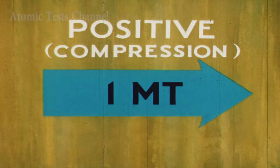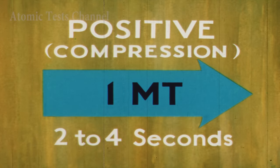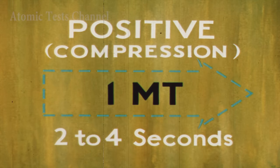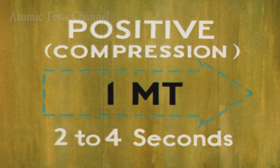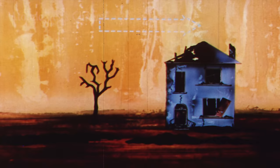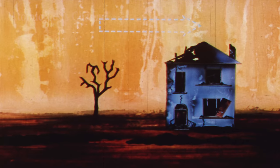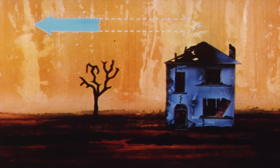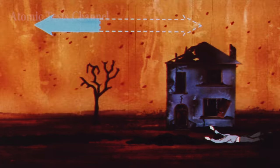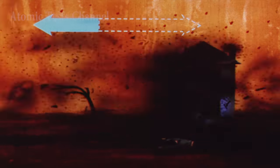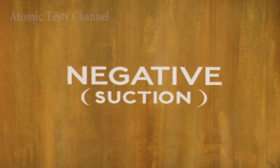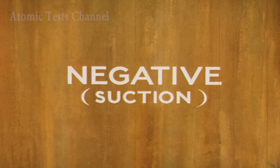For a one megaton explosion, it lasts for about two to four seconds. This positive phase is the period of maximum destruction. After this, the pressure falls again until it is the same as that of the original atmosphere. Next, the pressure falls to below that of the original atmosphere. At this point, the wind caused by the blast blows back towards the point of explosion and may cause further damage, although pressures and speeds experienced are lower than those of the positive phase. This period is known as the negative or suction phase.